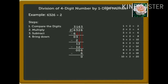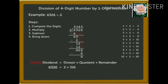It is time to check our answer. As we know, dividend equals divisor times quotient plus remainder. So, we will multiply 3163, that is the quotient, with the divisor, that is 2. When we multiply 3163 by 2, we get the answer 6326 plus 0, that is the remainder, and we get the answer 6326. That proves we have solved the question correctly.